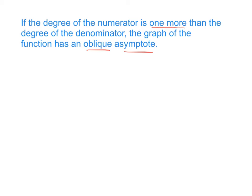For example, this function here, the degree of the numerator is two, and the degree of the denominator is one. Since two is one more than one, this function will have an oblique asymptote.